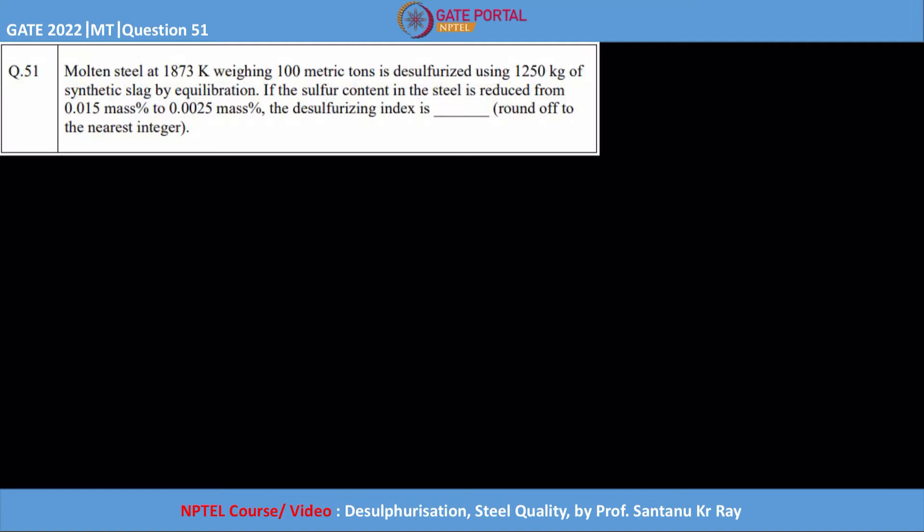If the sulfur content in the steel is reduced from 0.015 mass percentage to 0.0025 mass percentage, the desulfurizing index is... So first let us try to understand this particular question. The weight of the overall molten steel is 100 metric tons or 100 tons. This is the total steel that you have.